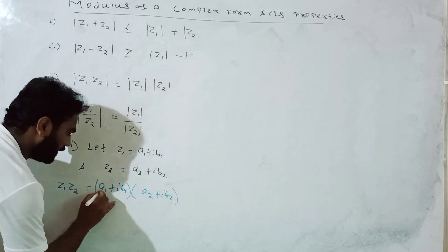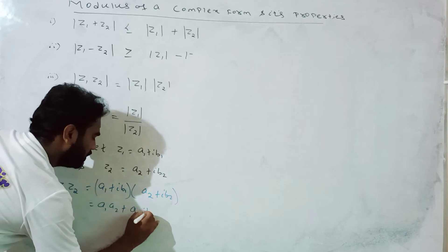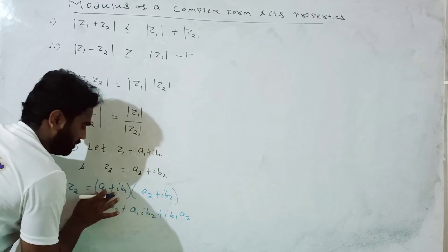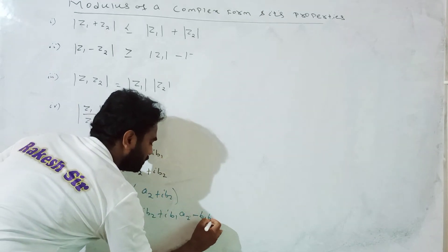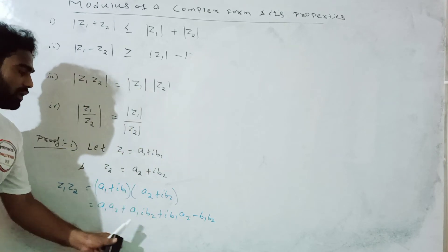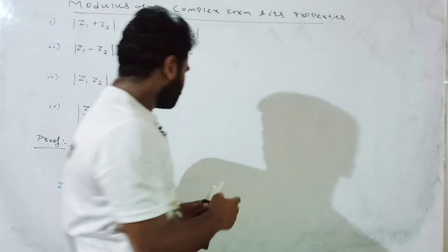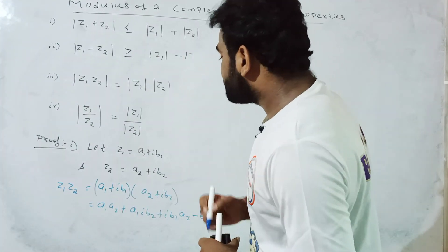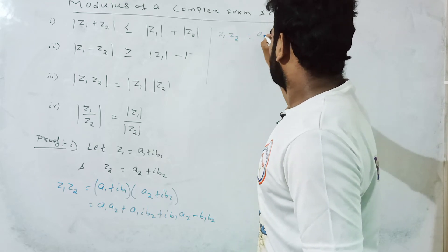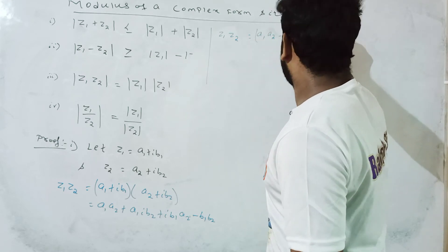Multiplying: z1 times z2 equals (a1 plus ib1)(a2 plus ib2) equals a1a2 plus a1(ib2) plus (ib1)a2 plus i-squared b1b2. Since i-squared equals minus 1, this gives z1z2 equals (a1a2 minus b1b2) plus i(a1b2 plus a2b1).